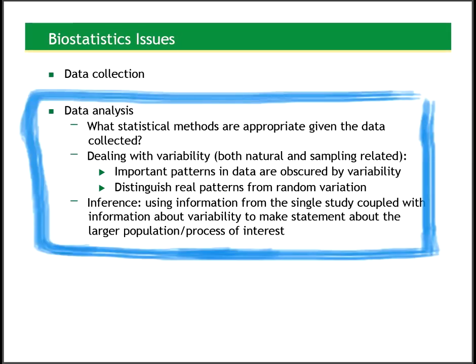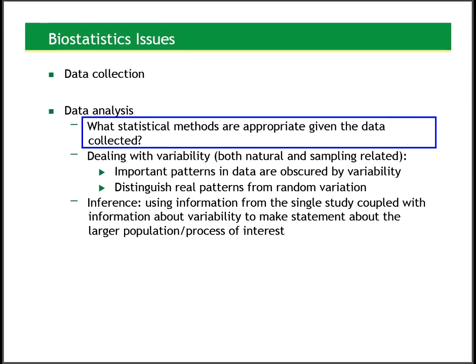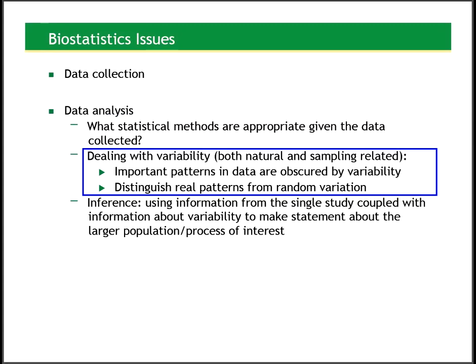Step three: biostatistics has many roles in the data analysis portion. We want to determine what statistical methods are appropriate given the data we've collected. We want to determine how to deal with the variability in our data — both natural variability and sampling-related variability, which is a function of the natural variability. Many times what we're trying to do is distinguish important patterns in our data that may be obscured by some variation. In essence, we're trying to separate the signal in our data from the noise around it — to distinguish real patterns, real differences, and real findings from those that are just random noise.